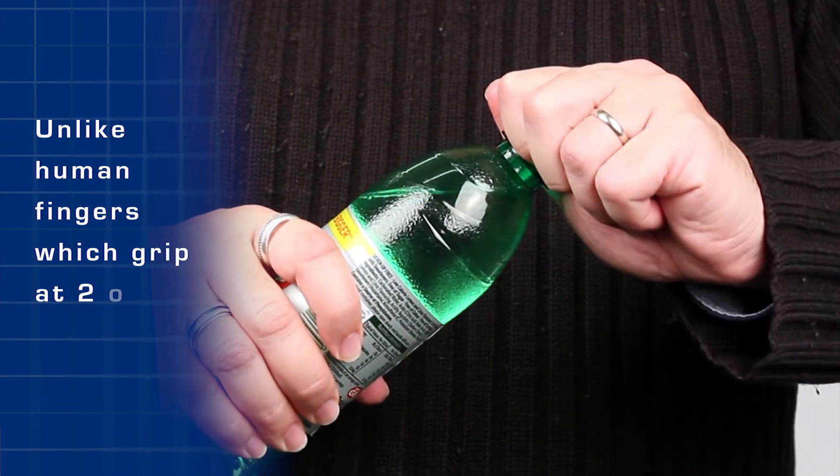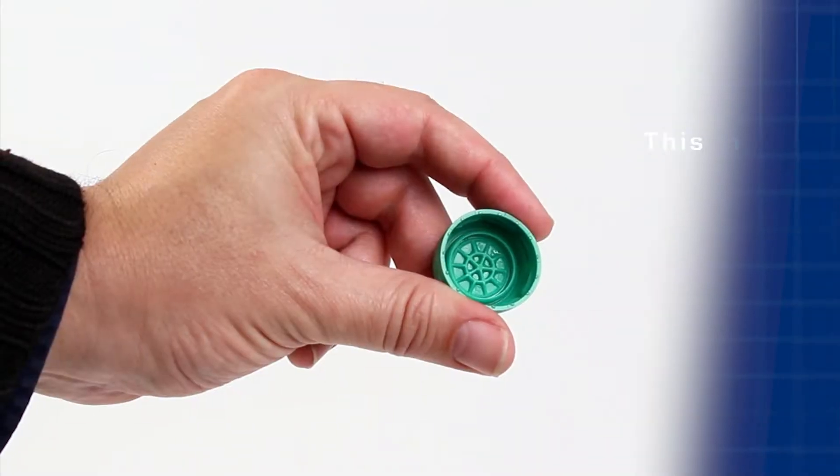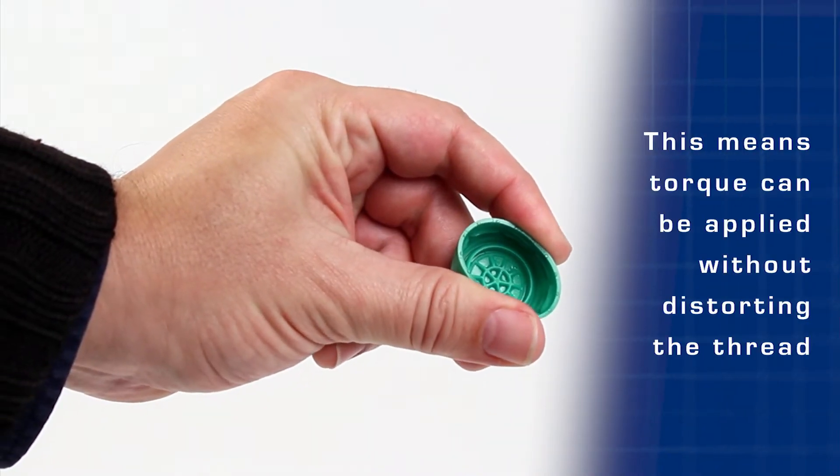Unlike human fingers or standard pegs which grip at only two or four points, this means that torque can be applied without distorting the thread.